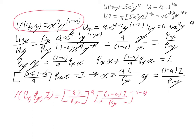It's helpful to rewrite this as a^a (1-a)^(1-a) times I^(a+1-a). The a's cancel, leaving I^1, then Px^(-a) Py^(-(1-a)). That's the indirect utility function for the standard Cobb-Douglas.